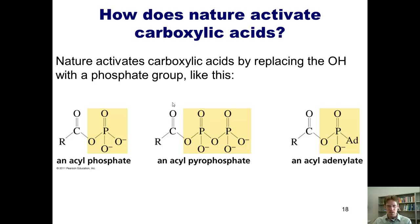How in the world does it do that? What happens is nature often replaces OHs with these groups, which are called phosphate groups. You might have seen structures like this in biology courses. This is an acyl phosphate, an acyl pyrophosphate, when there are two linked phosphate moieties, and an acyl adenylate. This is where there's an adenyl moiety attached to your phosphate.